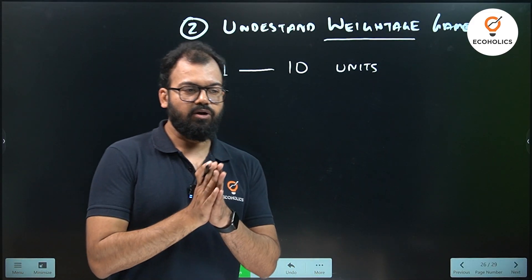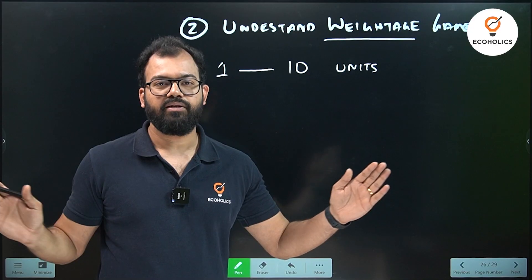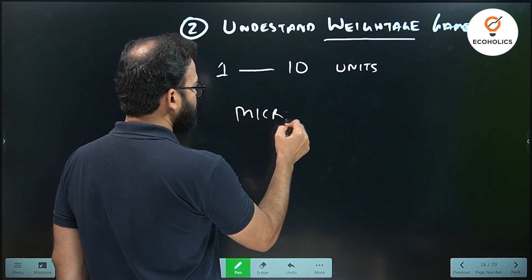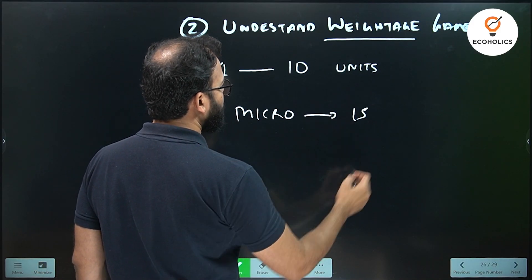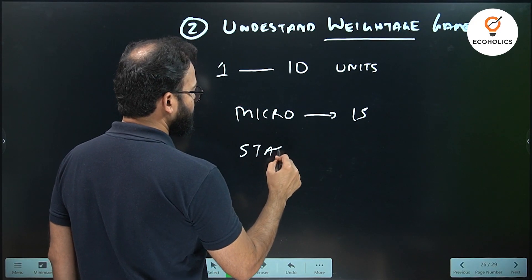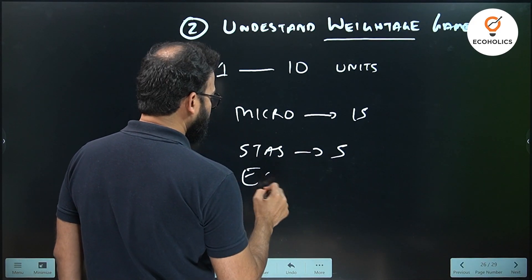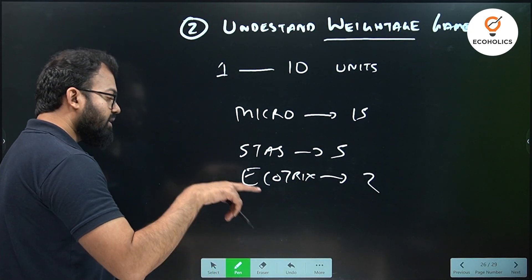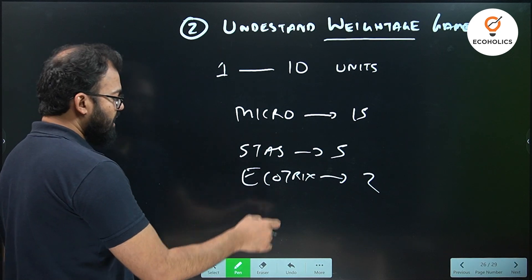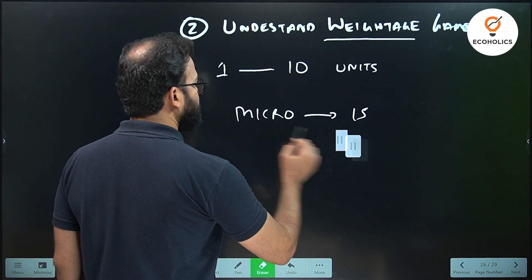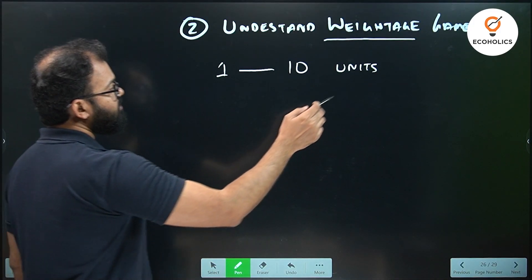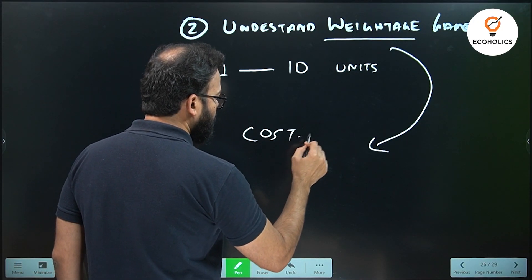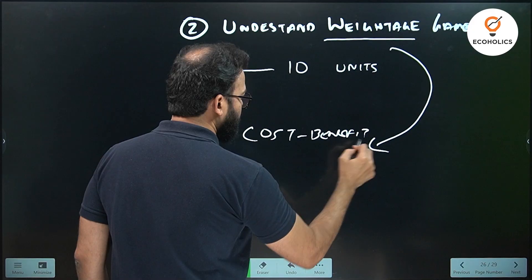This is how you approach number one. Second is you understand the weightage game. From units one to ten that they have given, you must have realized that the syllabus has been fairly spread out evenly. But when you see the questions in past papers, you will find questions from microeconomics like 15, but from stats you may find five, or from econometrics you may find two questions. Although they have given that they will ask equal weightage in all these questions, the actual weightage is different.